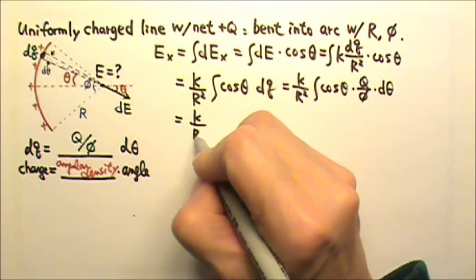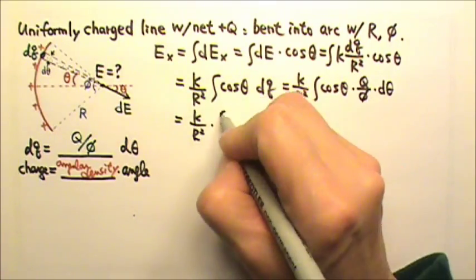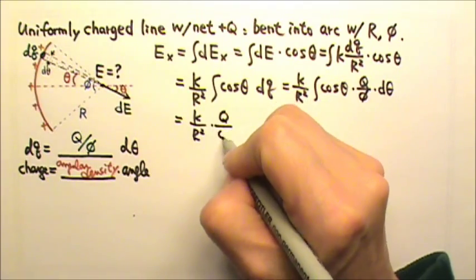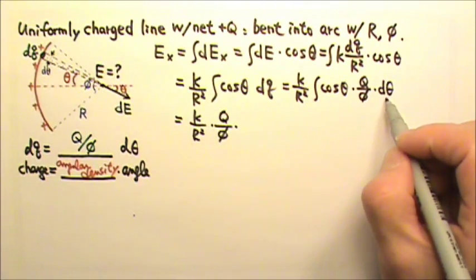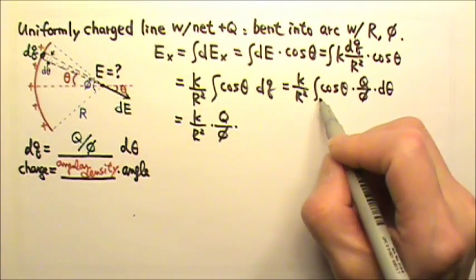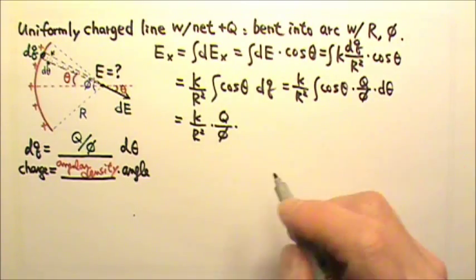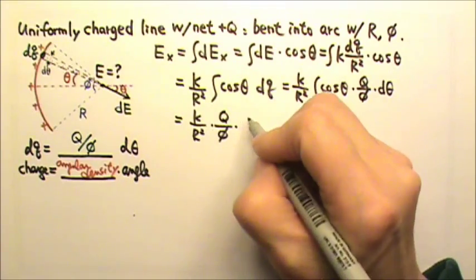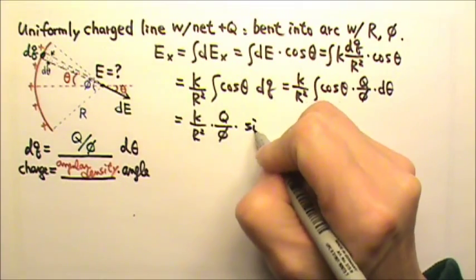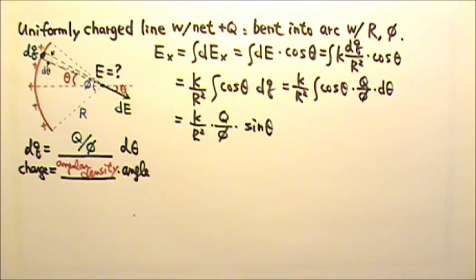So we still have k over R squared, and then we take out q over phi as a constant, leaving us to integrate cosine theta with respect to theta. The integral of cosine theta gives us sine theta.